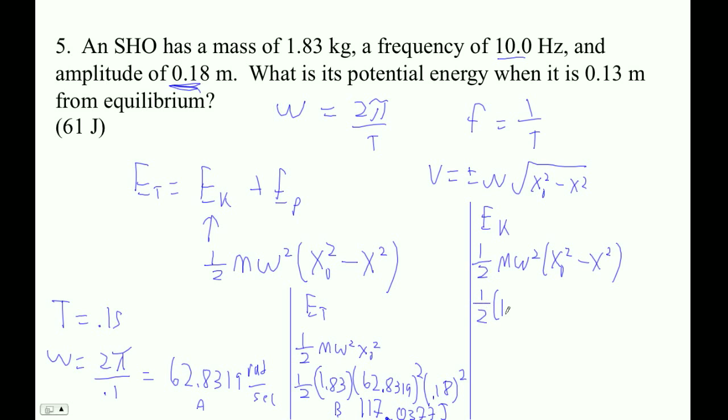So ½ times 1.83 times our 62.8319 squared. And then let's see, 0.18 is our amplitude, so 0.18 minus 0.13 squared. So let's try this: 0.5 times 1.83 times my value that I've stored in A, which is 62.8319, squared times parentheses 0.18 squared minus 0.13 squared, right parentheses. And I get that the kinetic energy is 55.99 joules. And now I'm all set.